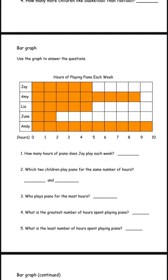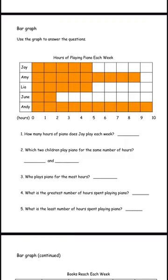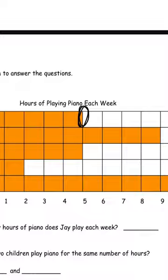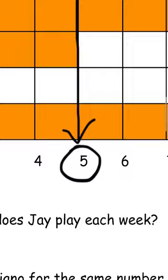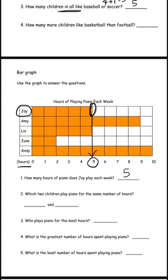It says, hours of playing piano each week. Number 1 is asking, how many hours of piano does Jay play each week? Jay is on the top. The bar ends right over here, and if we go down and see, it ends at 5. So it's going to be 5 hours. How many hours of piano does Jay play each week? 5. So 5 is the answer for number 1.